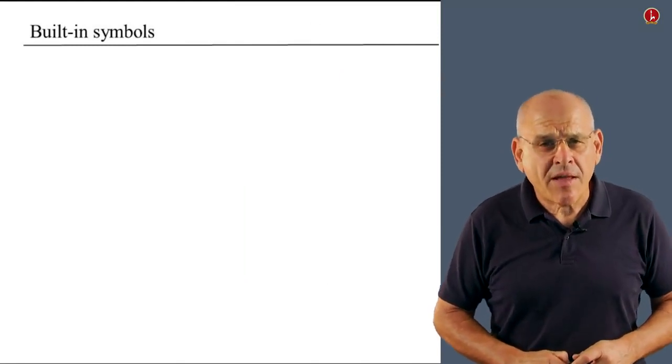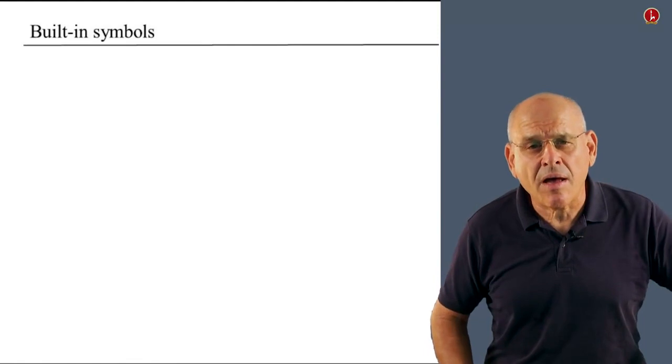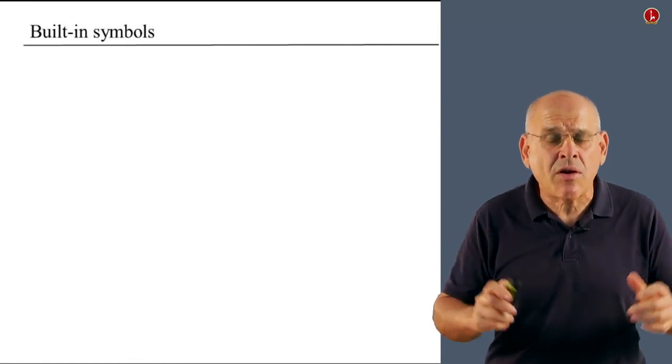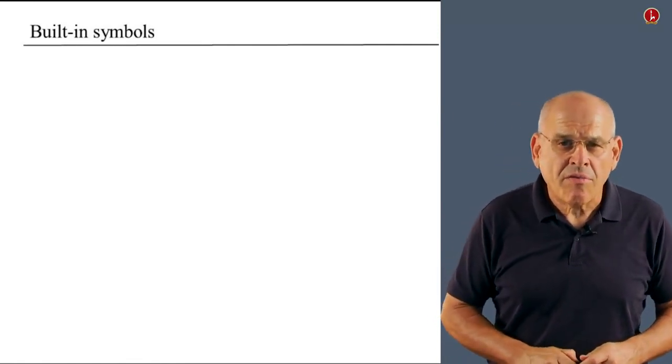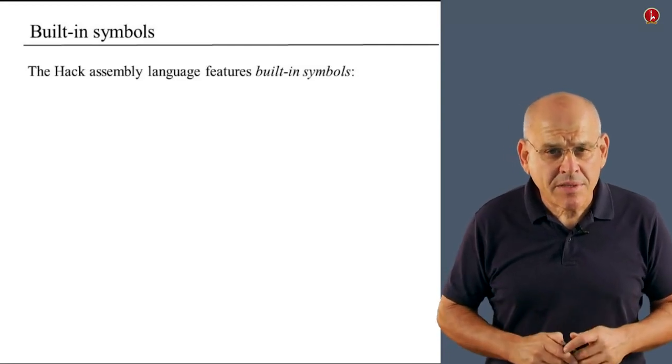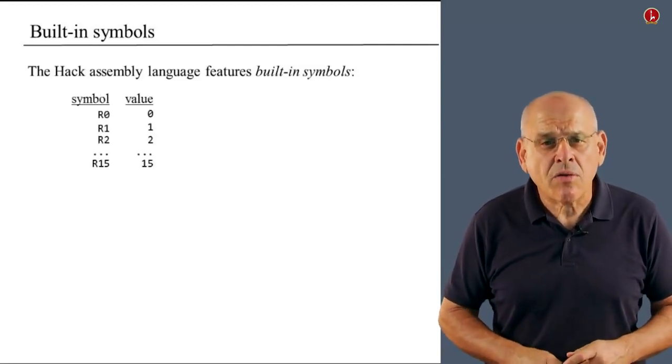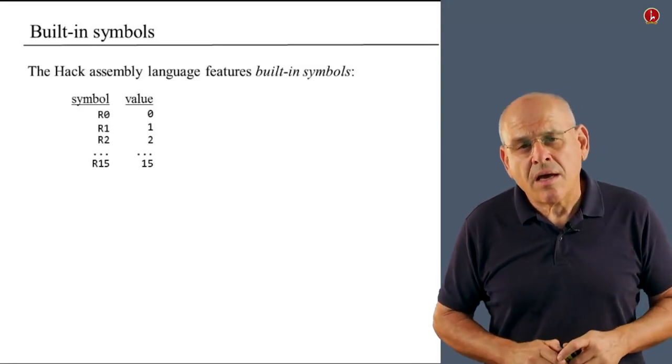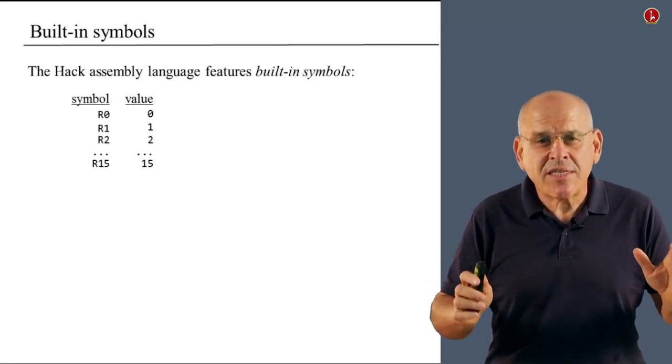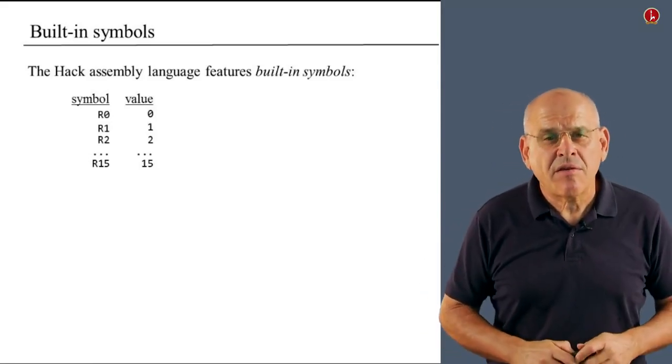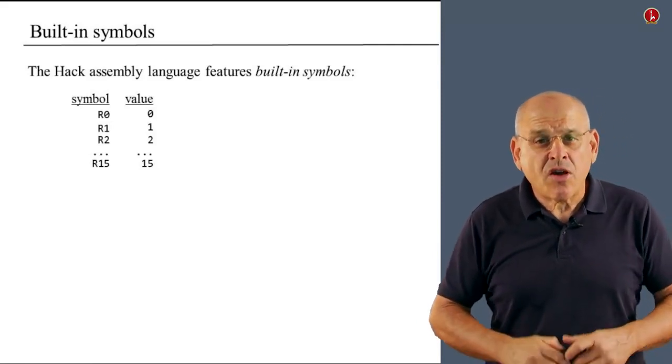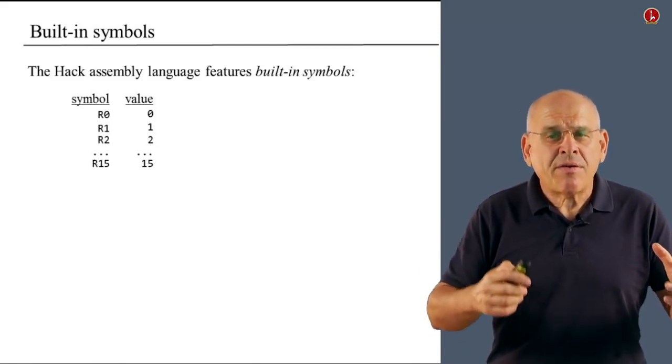All right. Before the end of this unit, I'd like to say a few things about another feature of the language that we haven't yet discussed. And by saying this, I'm basically going to complete the specification of the Hack Machine language. The language features several built-in symbols. And here they are. First of all, we have a set of 16 so-called virtual registers. Or to say it more accurately, we have a set of 16 labels that we use as if they represented virtual registers.